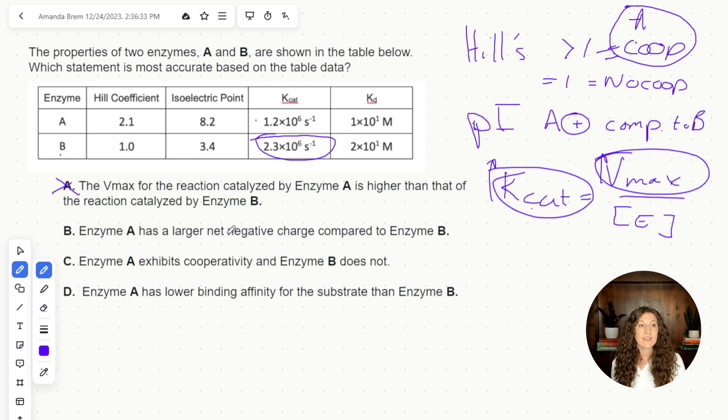B, enzyme A has a larger net negative charge compared to enzyme B. Actually, we determined that it was probably more likely to be positive, because a higher PI comparatively is going to be more positive. So that's going to be eliminated.